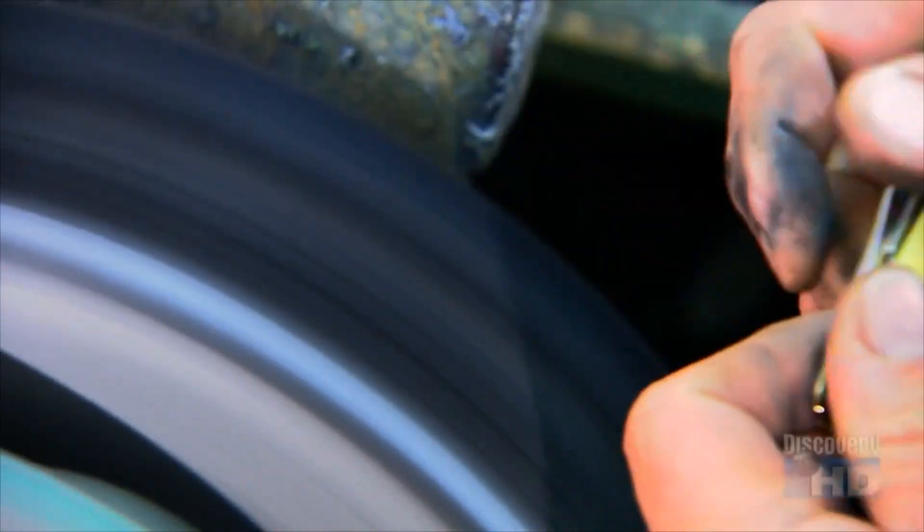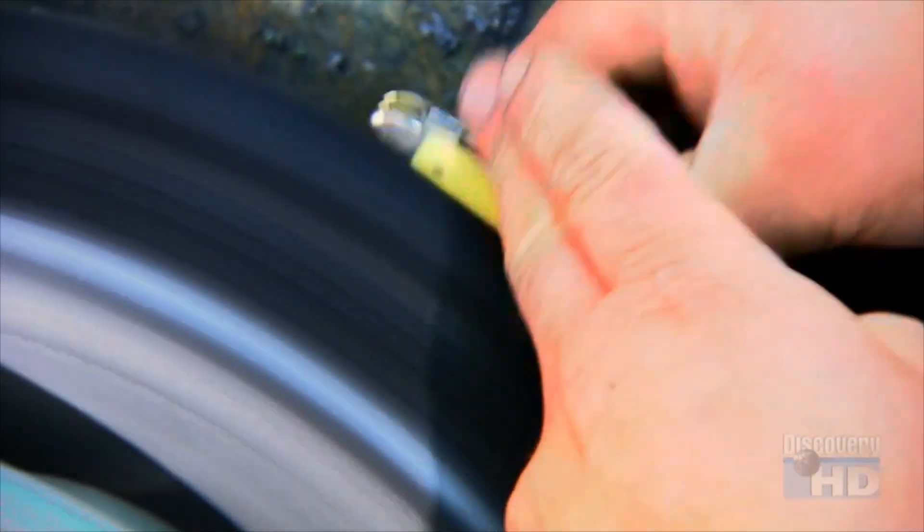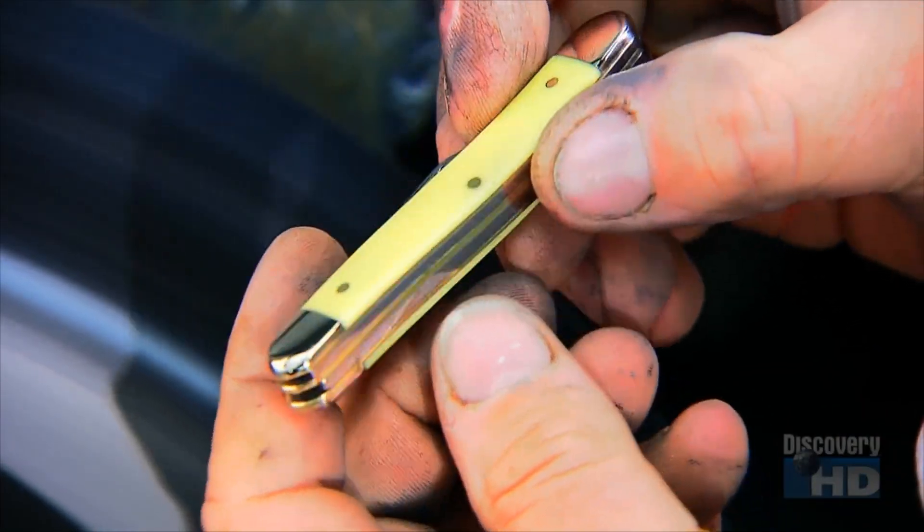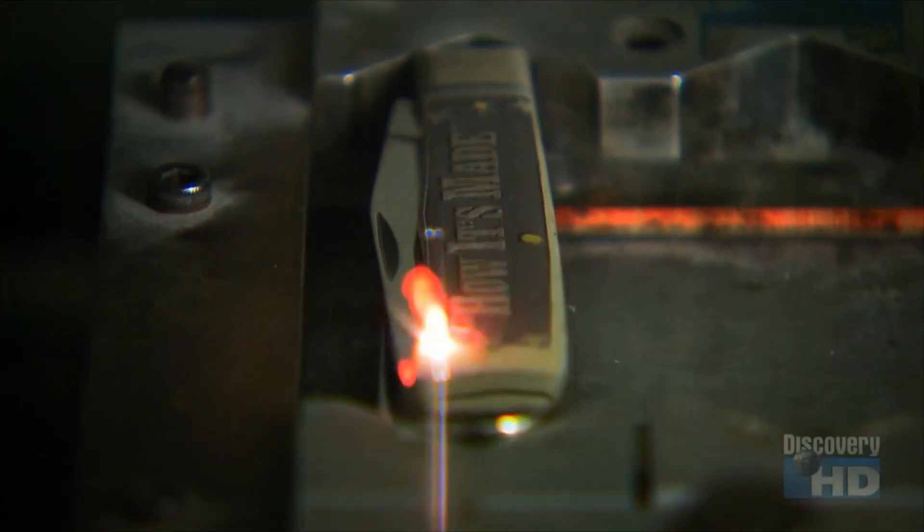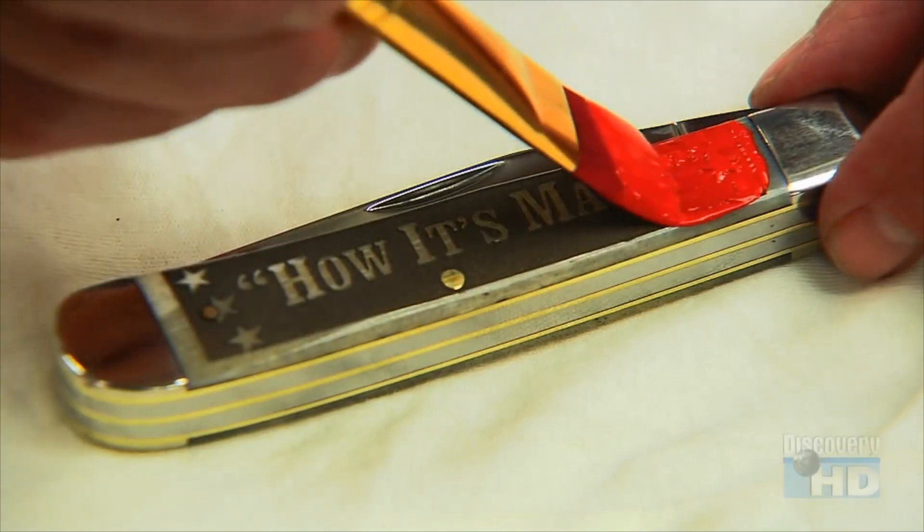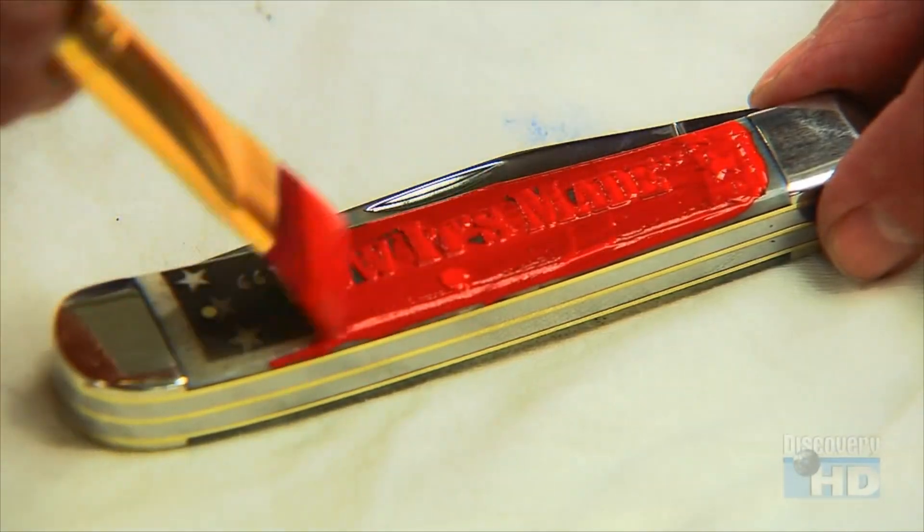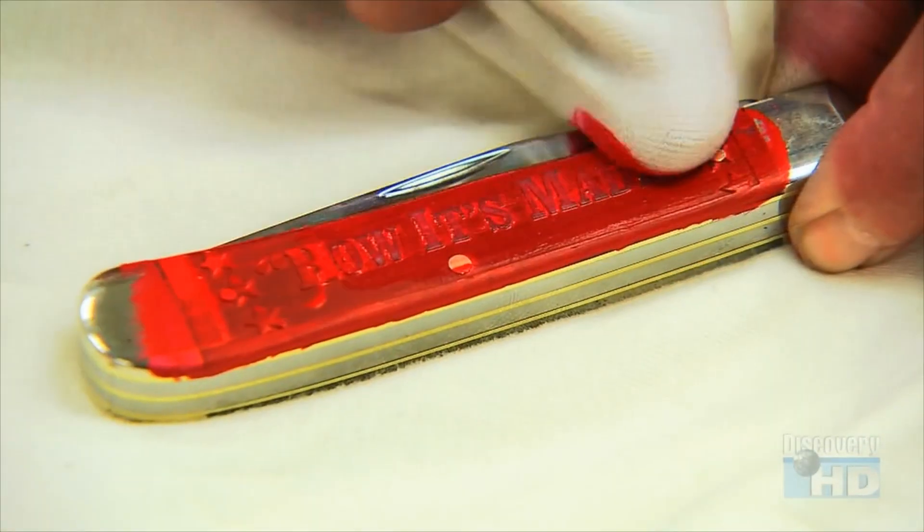After sharpening, they retract all the blades and buff the knife until it shines. Here, a laser etches an insignia into the bone handle. They enhance the engraving with paint. And now you have a pocket knife that really makes a statement.